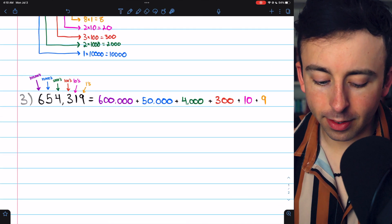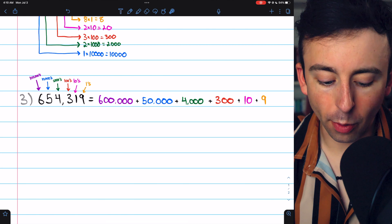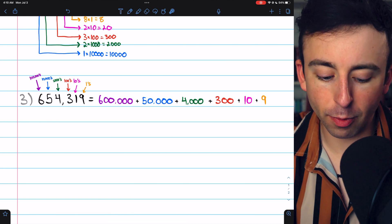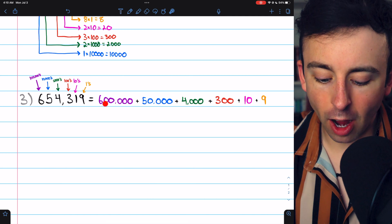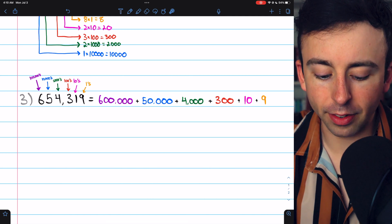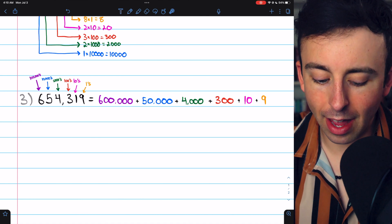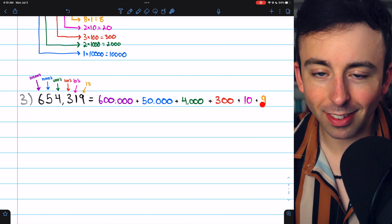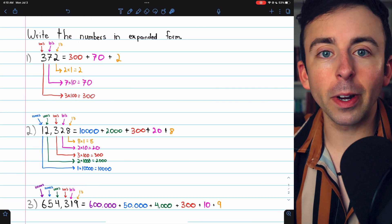I'm going to zoom in and put the answer on screen now. And there it is. This number goes all the way up to the 100,000's place. So when we write this out in expanded form, we have 600,000 plus the next place value, 50,000, plus 4,000, plus 300, plus 10, plus 9. And that's how you write a number in expanded form.